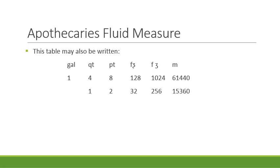One quart is composed of 2 pints, 32 fluid ounces, 256 fluid drams, and 15,360 minims. One pint is composed of 16 fluid ounces, 128 fluid drams, and 7,680 minims.